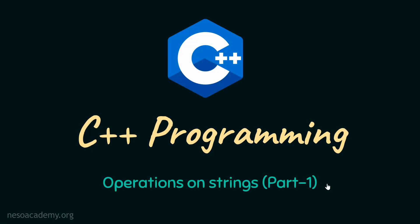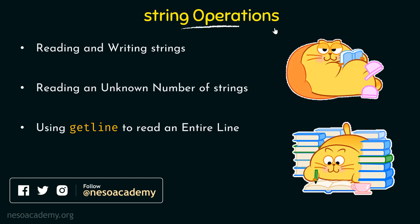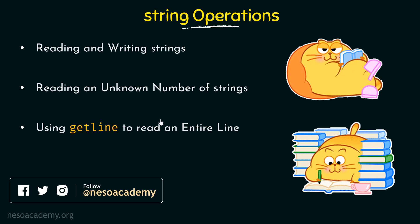In the previous lecture, we were introduced to the string type — how it works, what it is used for, and how to initialize strings. Now, in this lecture and for the coming few lectures, we will be discussing operations on strings. Since there are quite a few of them, we will be dividing this topic into several parts. In this first part, we will be talking about three important string operations: reading and writing strings, reading an unknown number of strings, and using getLine to read an entire line.